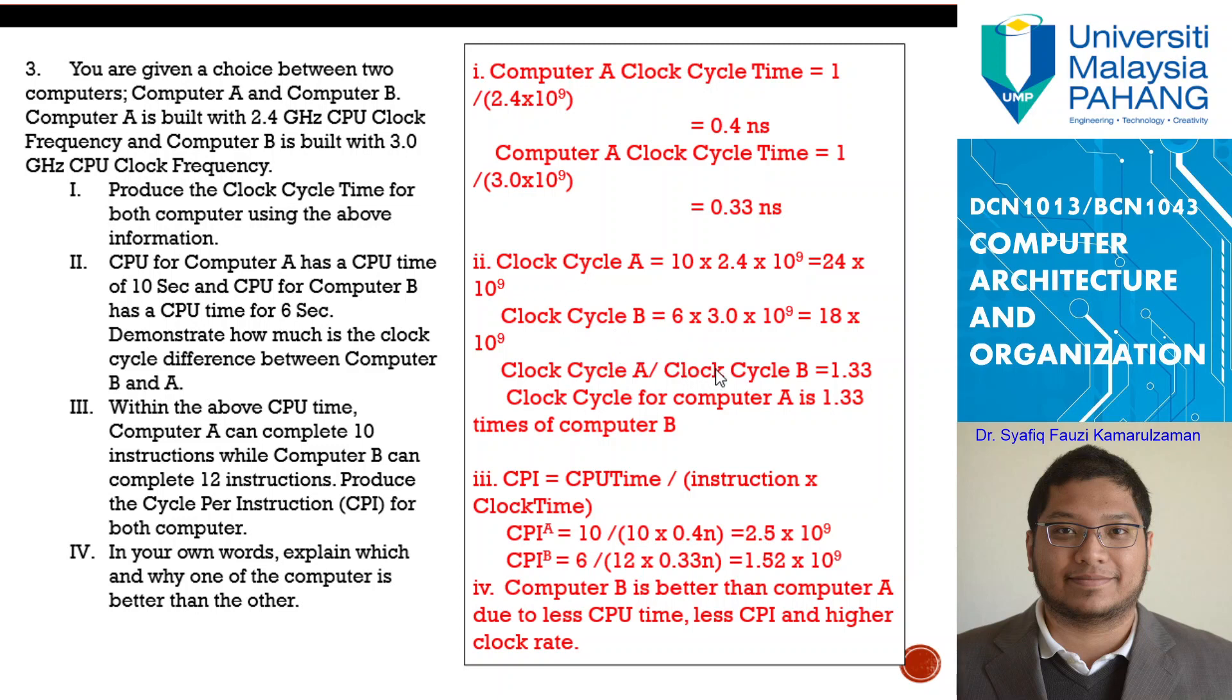Now, in order to complete the CPU, the clock cycle difference, you can see the clock cycle difference between CPU A and CPU B is equal to clock cycle A divided by clock cycle B, which is 1.33. 1.33 A is using 1.33 clock cycle more than computer B, basically. They use 1.33 times more tick-tocks than computer B at a lower frequency.